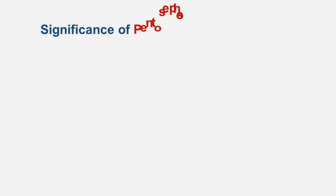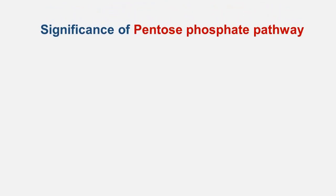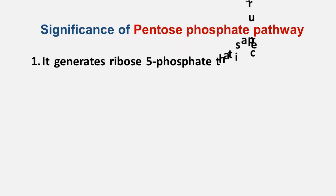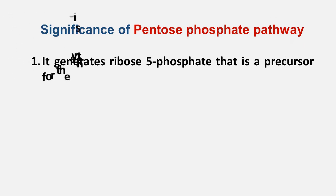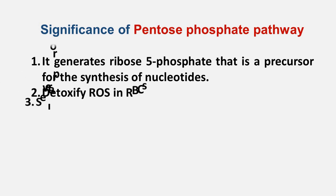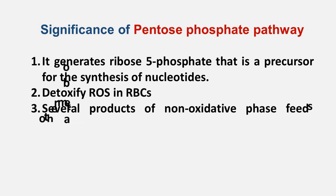Now the question arises: why does this pathway take place? There are three basic reasons. First is the production of pentose sugar to enter into the nucleotide synthesis pathway. Second is to detoxify reactive oxygen species in erythrocytes or red blood cells. Third, several products of the non-oxidative phase feed other metabolic pathways of the body.